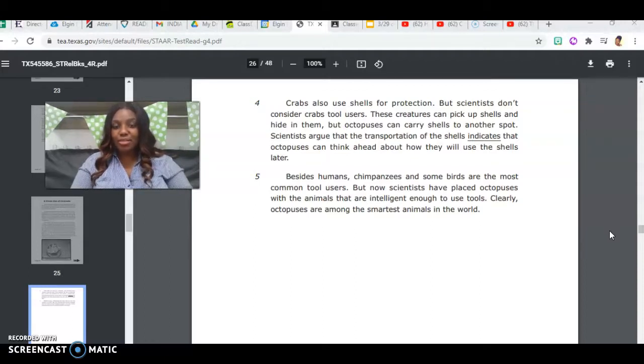Besides humans, chimpanzees and some birds are the most common tool users. But now scientists have placed octopuses with the animals that are intelligent enough to use tools. Clearly, octopuses are among the smartest animals in the world.